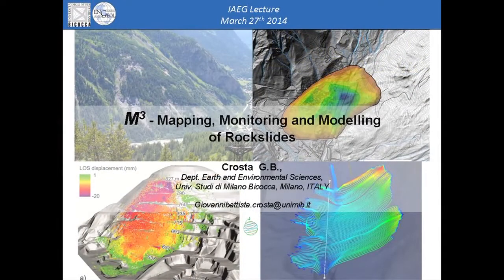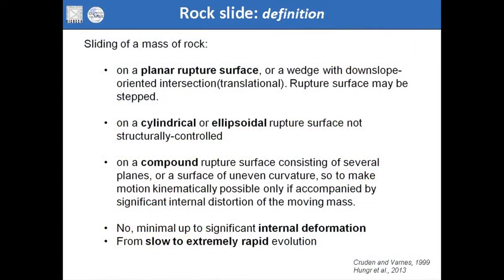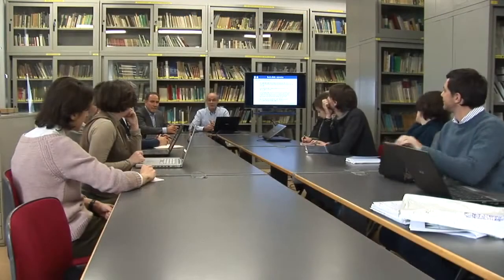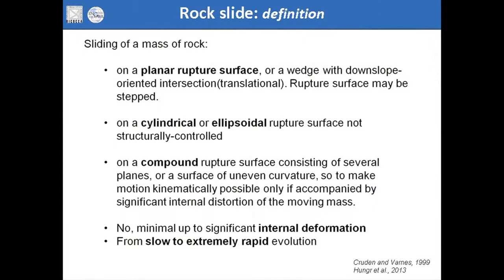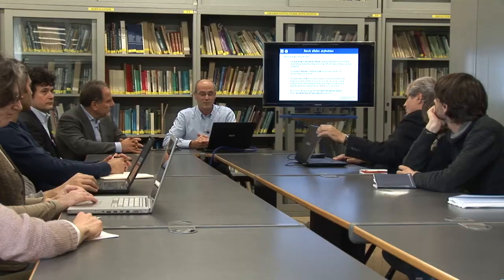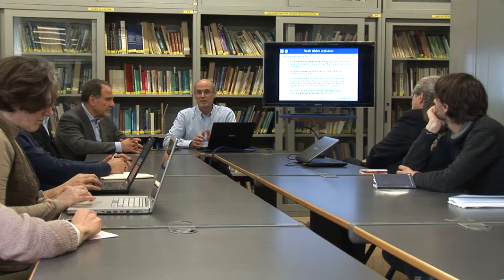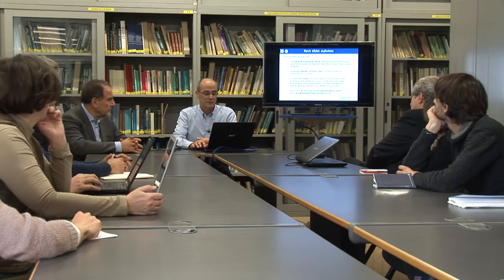Today the subject of my presentation will be mapping, monitoring and modeling of rock slides. What we intend for rock slides is usually the sliding of a rock mass on a planar surface, a curvilinear surface or a compound surface. This is just an initial difference between a single class of landslide phenomena. Changing the size and type of surface, we will have different behavior of the rock mass, including different internal deformation and quite different types of evolution of the same phenomenon.